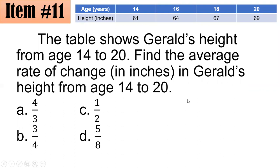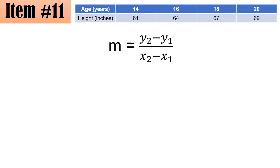If you see a problem like this, always remember that the average rate of change is simply the slope. We're asked for age 14 to 20, so we disregard everything in the middle and focus on these two points. We'll write them as coordinate pairs: (14, 61) and (20, 69). So we just get the slope of these two points.